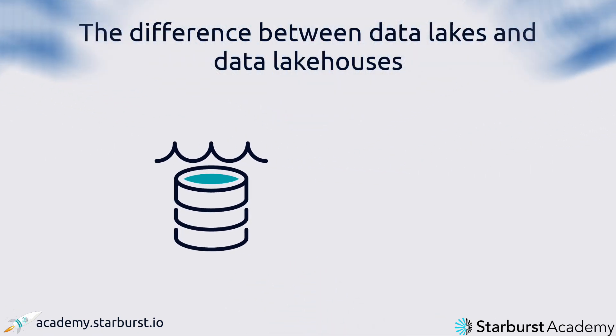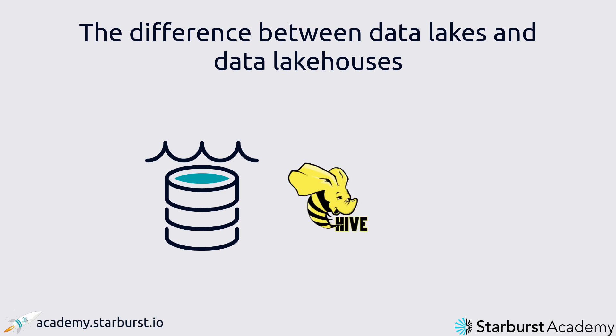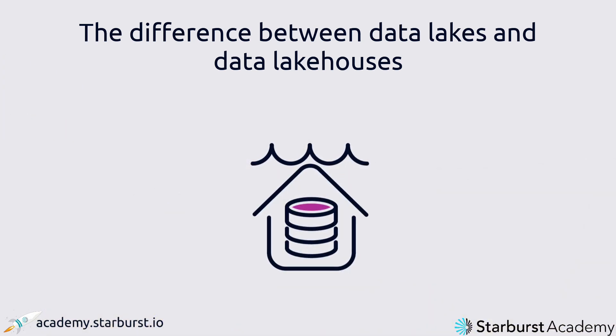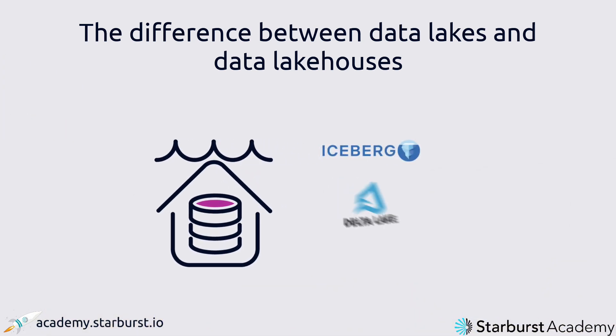First things first, you know that Hive tables lack certain essential features like ACID compliance and version control. Modern table formats solve this problem. They come in three varieties: Iceberg, Delta Lake, and Hudi. Later in this lesson we'll go through the differences between them, but for now let's imagine them as largely filling the same space.